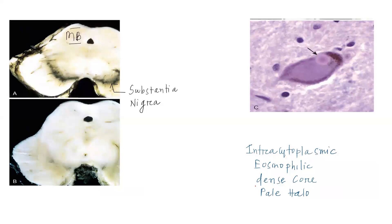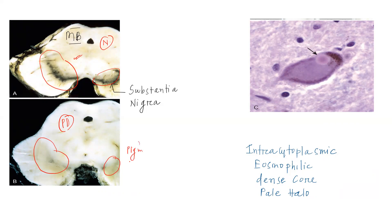Now coming to the morphology. Grossly, as you can see, this is a section of the midbrain — one from a normal person and one from a patient with Parkinson's disease. In the normal section you can see nice pigmentation in the substantia nigra, however in the patient with Parkinson's disease, the pigmentation is lost because of the loss of dopaminergic neurons. In histopathology, you are going to see this inclusion called Lewy body, which is made up of alpha-synuclein. Lewy body is described as an intracytoplasmic eosinophilic dense core with a pale halo — as you can see here, it has a dense core surrounded by a pale halo. That is all about Parkinson's disease.